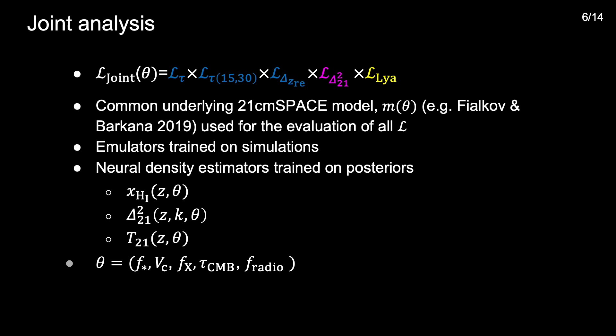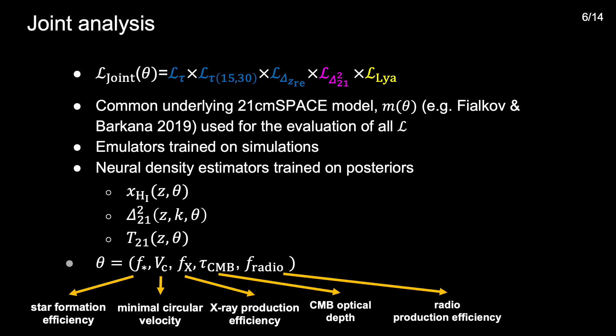Each is a function of the astrophysical parameters theta, which in this work are the star formation efficiency of early galaxies, the minimum circular velocity of dark matter halos hosting star forming galaxies, the X-ray brightness of the galaxies relative to local analogues, their ionizing efficiency parametrized by the CMB optical depth that it produces, and their radio production efficiency.